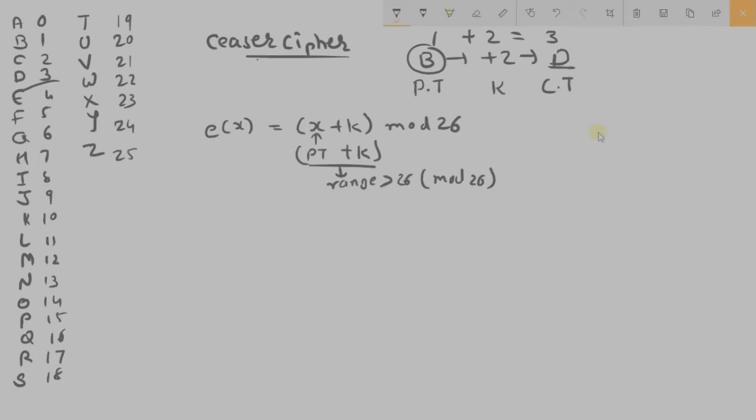And same, for decryption you need to minus your plaintext minus your key, and if that range exceeds you need to mod 26. So this was for encryption and this was for decryption.